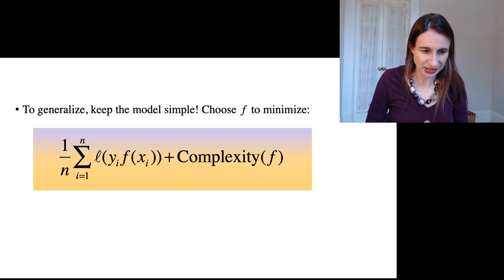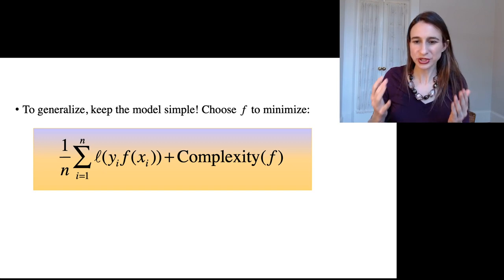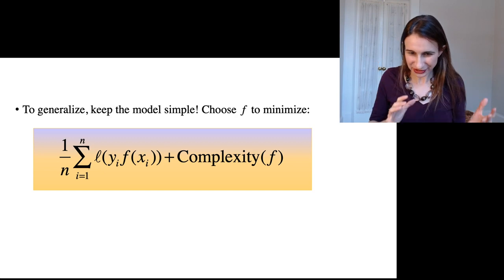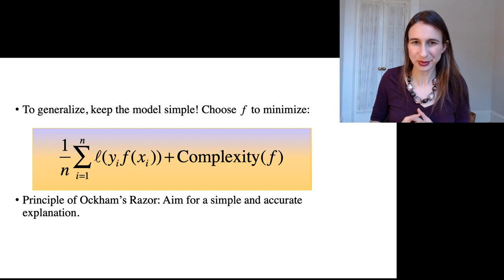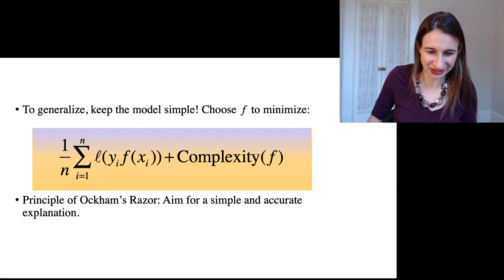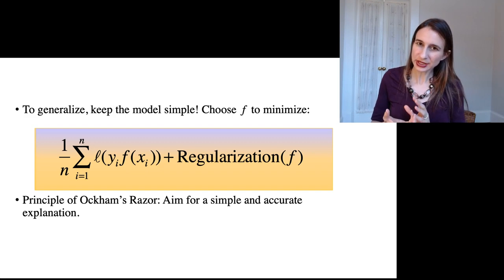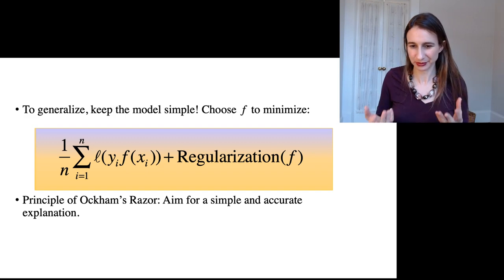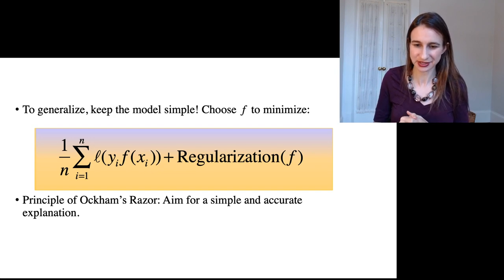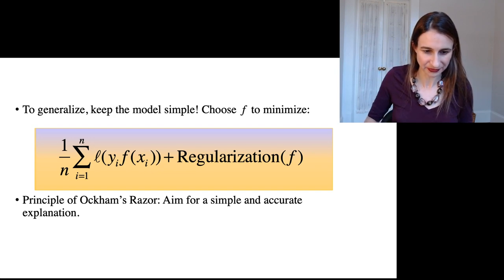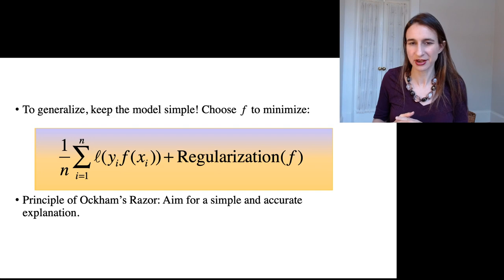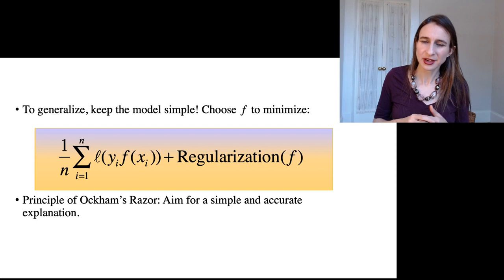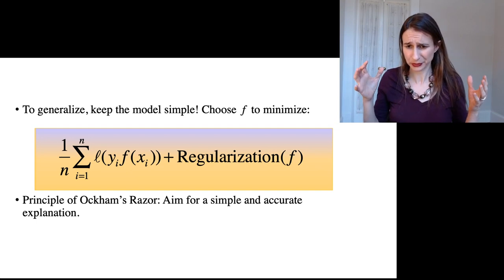To generalize, we want to keep the model simple. We choose the function F to minimize some balance between accuracy and complexity. And this agrees with the principle of Occam's razor, which says we should aim for a simple and accurate explanation. And so the way that complexity is often incorporated is using a regularization term. So it's some mechanism to keep the model simple. And that regularization term can be almost anything. You could try to make the model have fewer terms in it, or if it's a decision tree, you could make the model have fewer leaves in it.